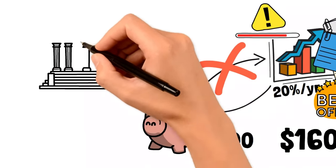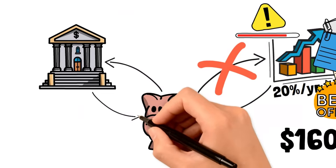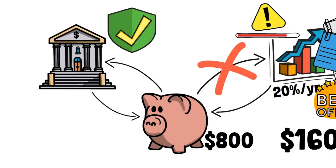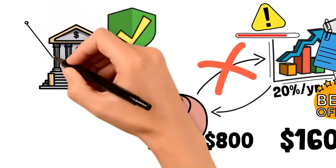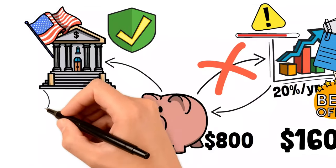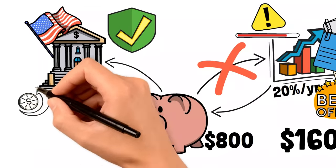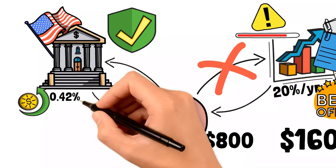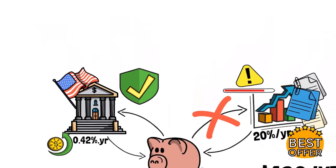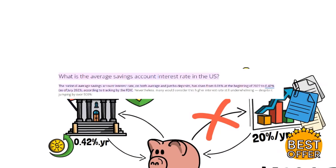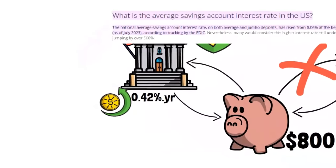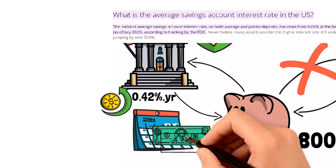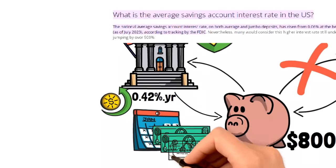Now you may wonder, what if I leave my money in the bank? After all, it's less risky. Bank savings accounts may be the safest way to not lose a dime, but they're also the least rewarding. Right now, the average savings account in America is yielding an interest rate of 0.42% per year. That means putting $800 in the bank today, one year from now, you'll have made an extra $3. That's right, just $3.